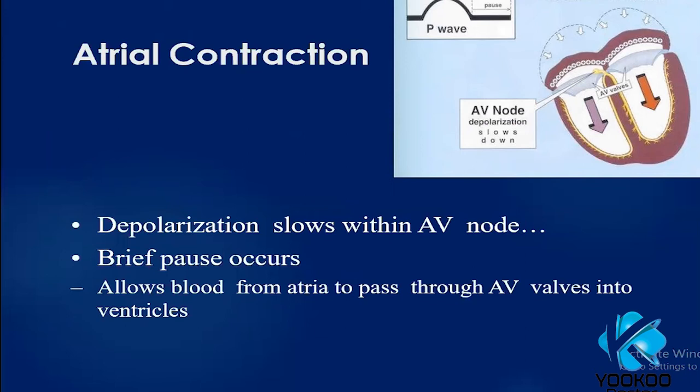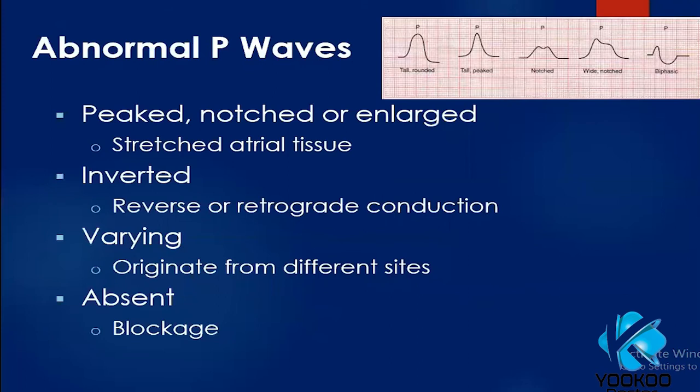After atrial depolarization, conduction slows within the AV node — there is a brief pause that allows blood to pass from the atria through the AV valves into the ventricles. This creates the PQ segment, or PR interval, during which there is a pause.